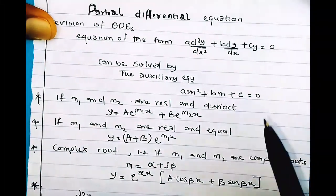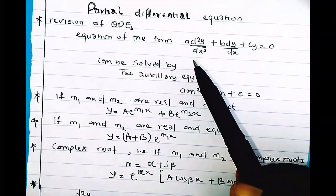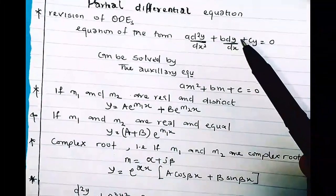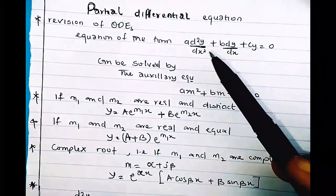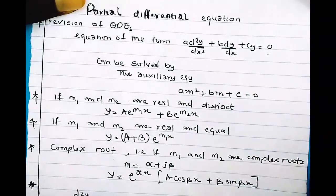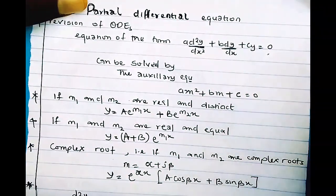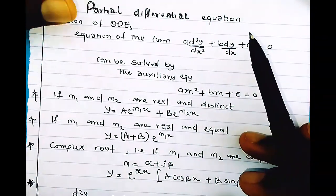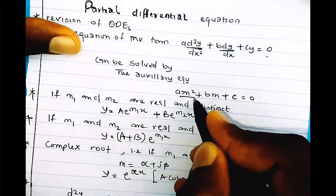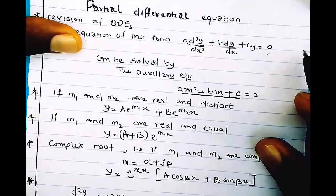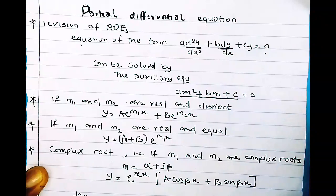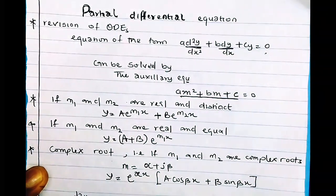Let's revise ordinary differential equations. This is the general form for a homogeneous ordinary differential equation. To solve it, we assume the auxiliary equation in a standard form — this is the standard auxiliary equation for the general form of this ODE.